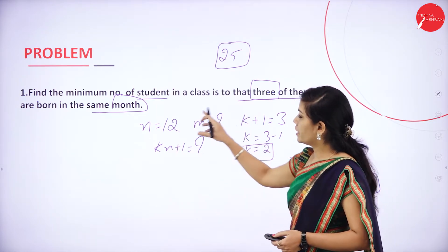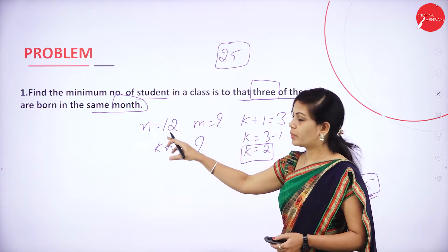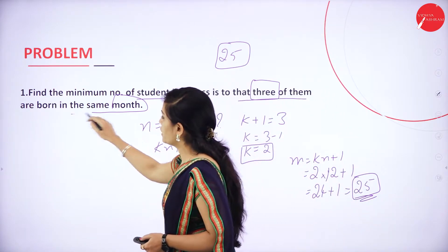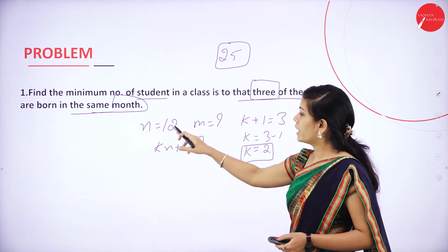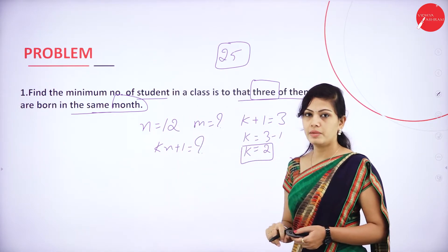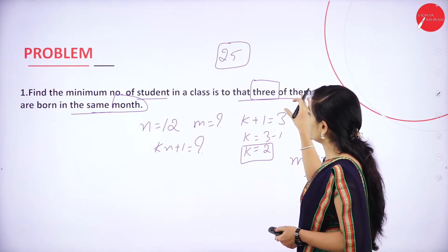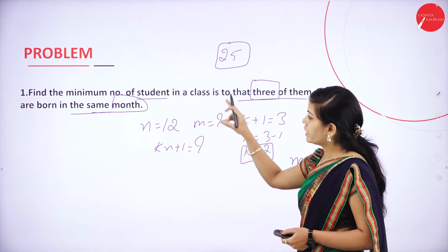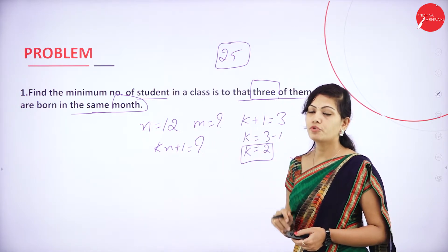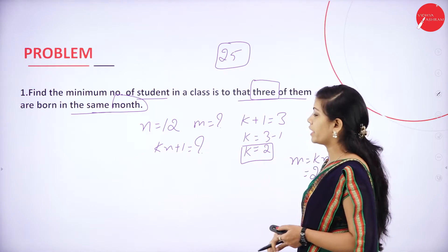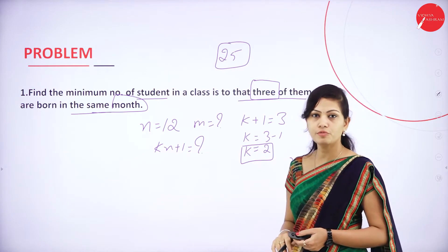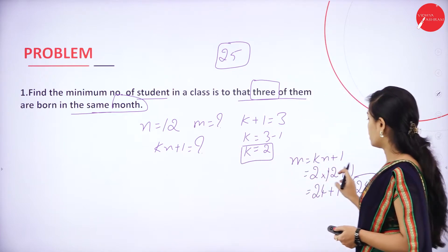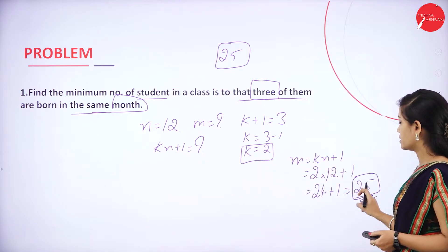Here the number of months is 12. They have mentioned 3 of them are born in the same month, so n is equal to 12. They have not mentioned the total number of students, so we have to find the total number of students. By using this formula we can easily find the total number of students, that is 25.